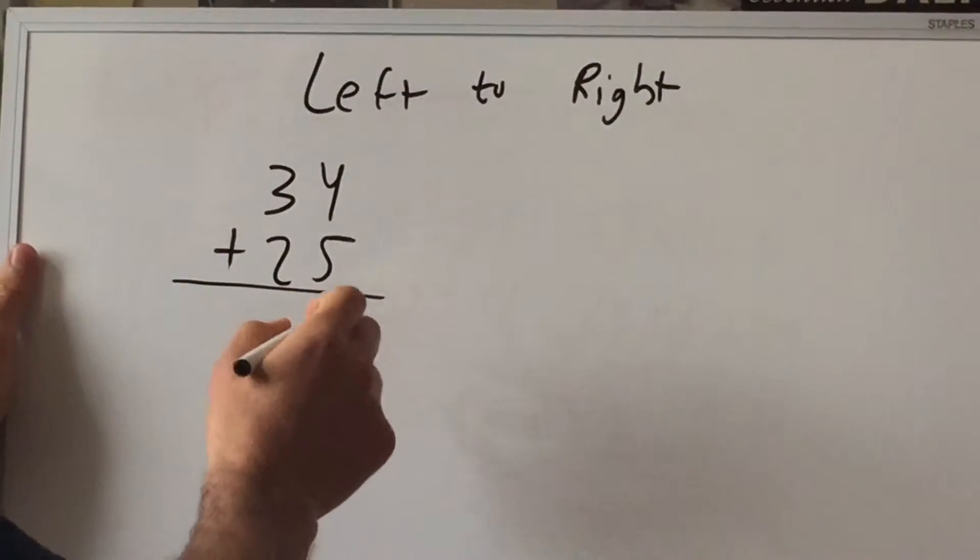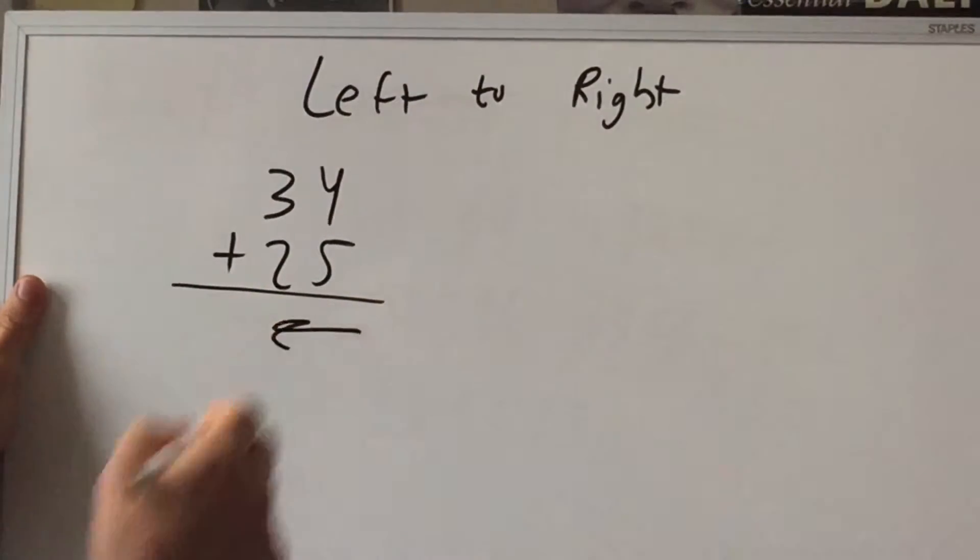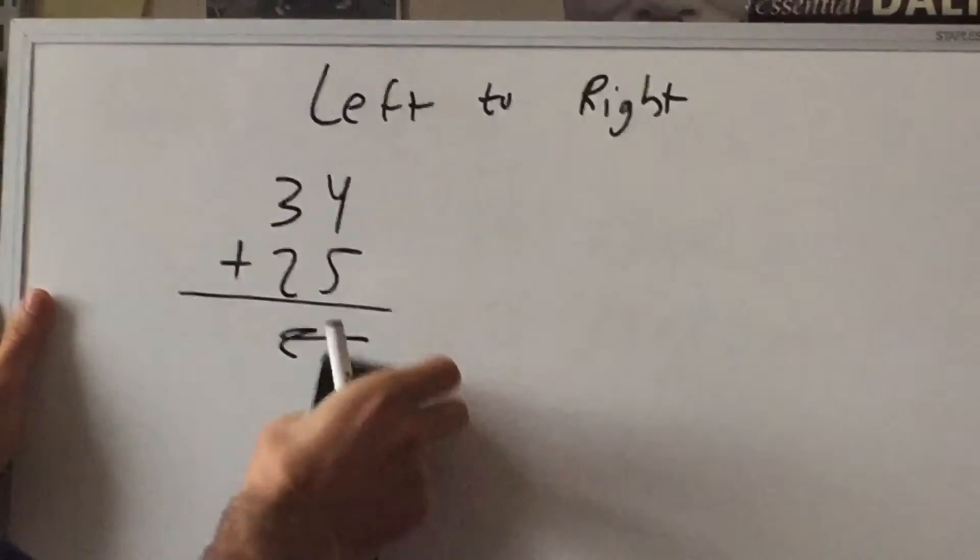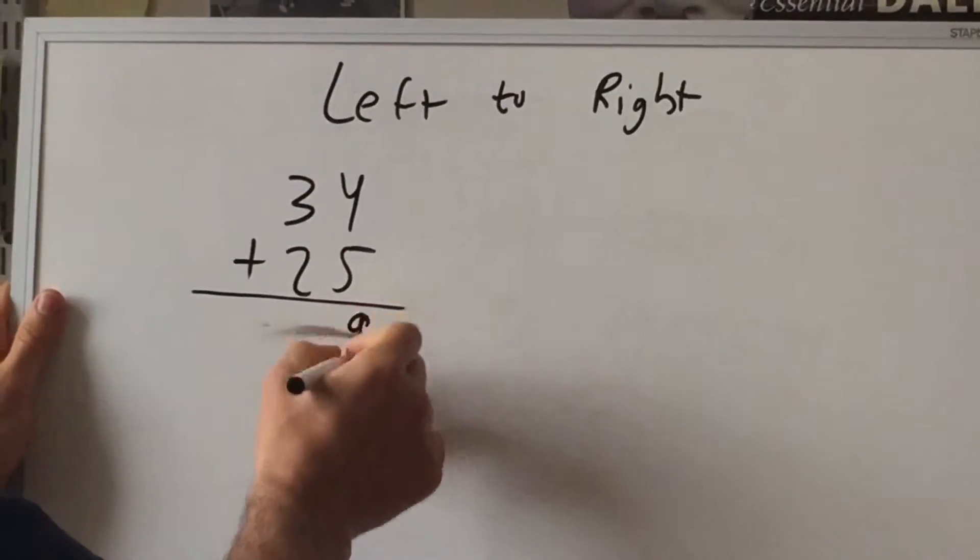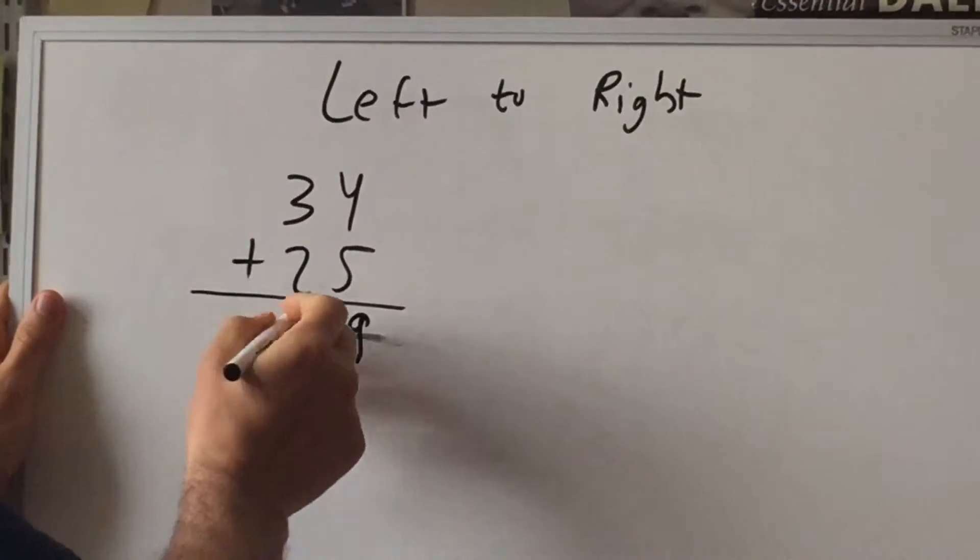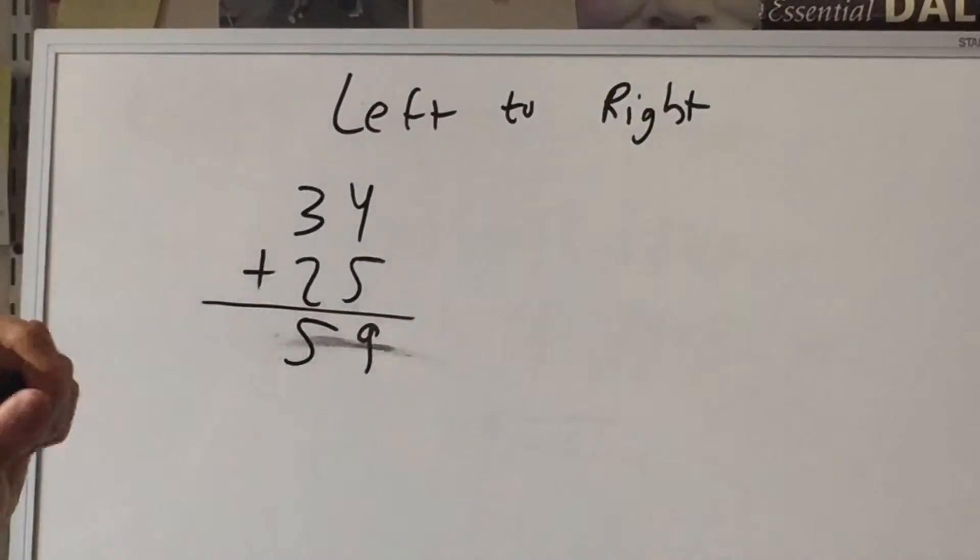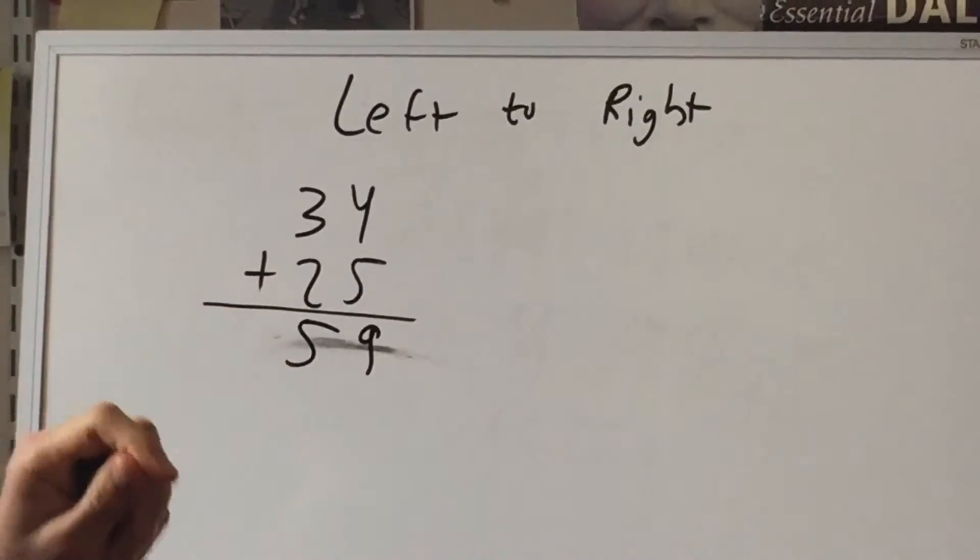So let's look at 34 plus 25. Now traditionally you're taught to do this right to left. So that would be get the 9, nothing carries over, so now we get the 5, that's fine.